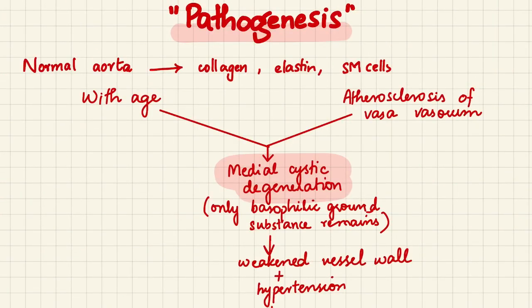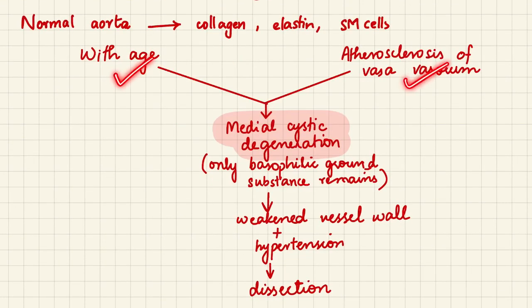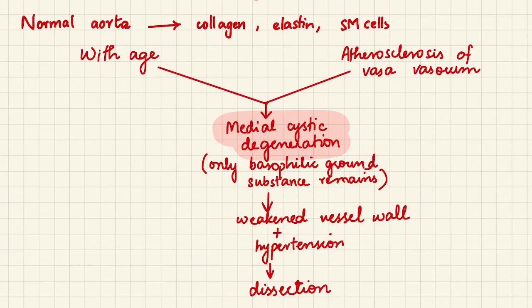The pathogenesis is straightforward. In the normal aorta we have collagen, elastin, and smooth muscle cells. With age, atherosclerosis of the vasa vasorum, or other etiologies, the aortic wall media undergoes cystic medial degeneration — ischemic or degenerative changes leave only basophilic ground substance remaining. This weakened vessel wall, combined with hypertension, leads to aortic dissection.